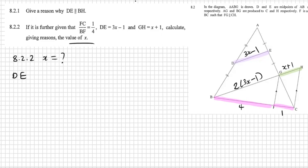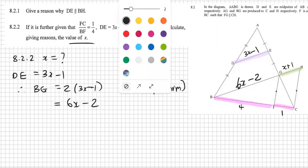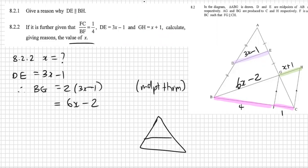Let's first get that proof down. So DE is equal to 3x minus one. Therefore, BG must be two times 3x minus one because of midpoint theorem, which you can put as midpoint theorem as your proof. Just make that 6x minus 2. It's just a more simplified version of it. 6x minus 2.